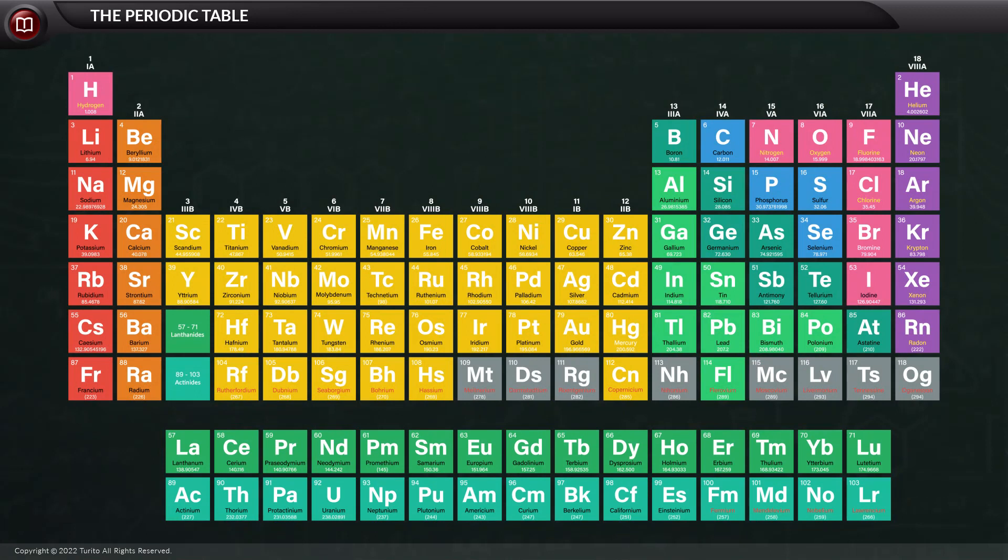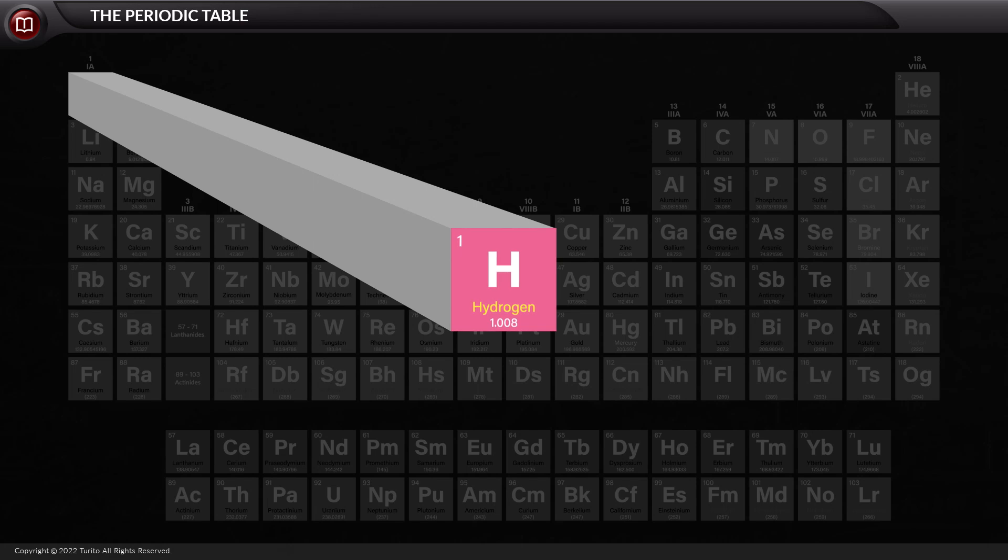Let us now speak about the representation of the elements. The element in the boxes is placed along with its atomic number and average atomic mass, symbol, and name.